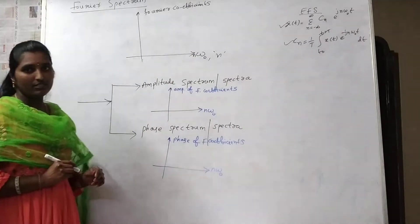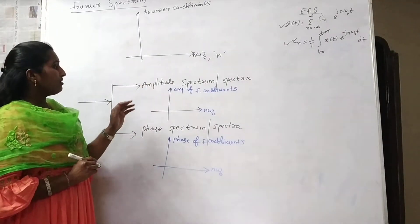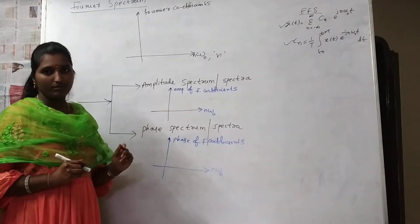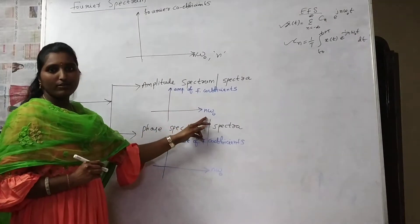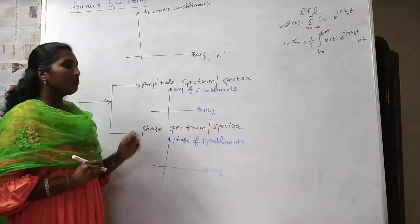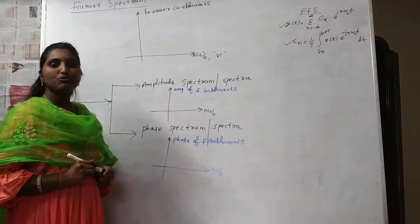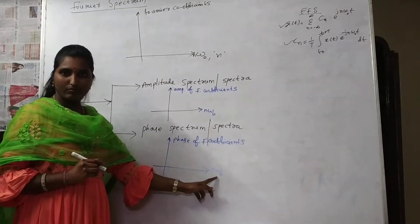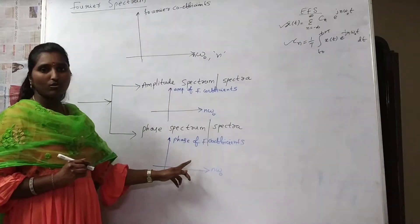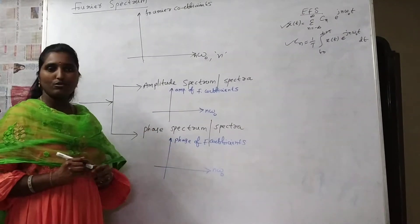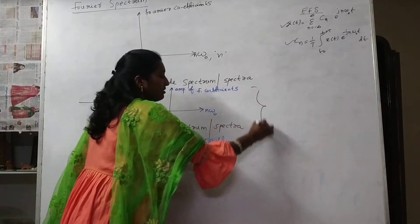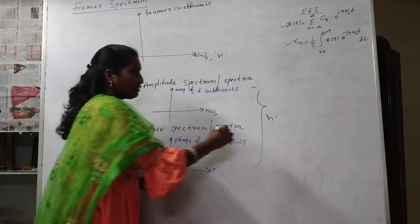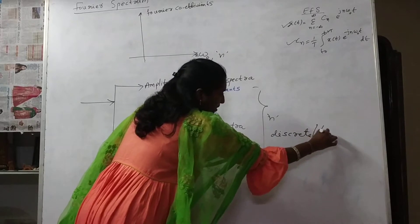There will be two ways of expressing the Fourier spectrum. One is amplitude spectrum and the other one is phase spectrum. Amplitude spectrum means on the x-axis its frequency for various n values, and on the y-axis consider the amplitude of the Fourier coefficients. For phase spectrum, on the x-axis consider the frequency for various n values, and on the y-axis consider the phase of the Fourier coefficients. Since n takes only integer values, it is also called discrete spectrum or line spectrum.